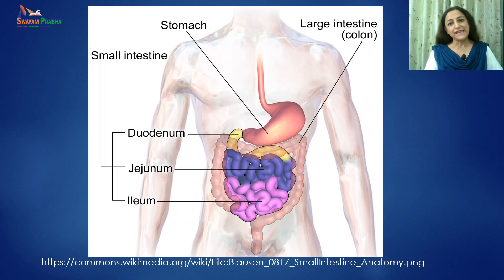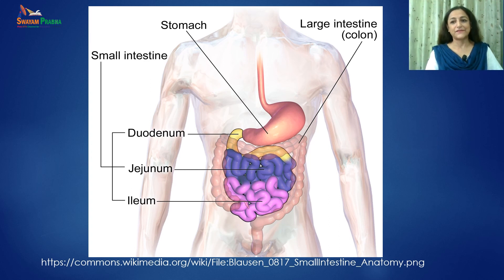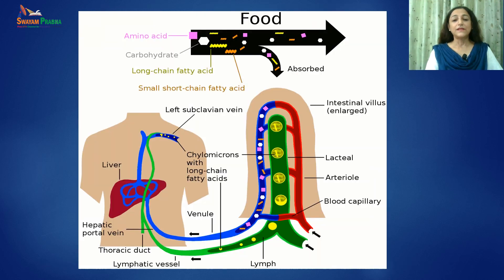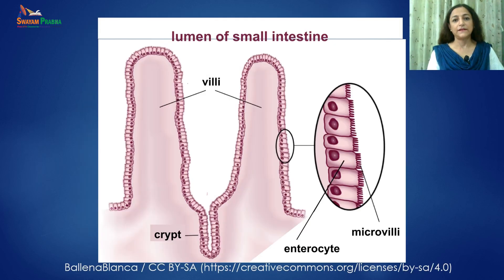The food which we eat is chewed, swallowed and digested by our body, and finally it reaches the small intestine for absorption of various nutrients present in our diet. The small intestine is a specialized organ which absorbs nutrients — carbohydrates, proteins, fats, macronutrients and micronutrients present in our food.